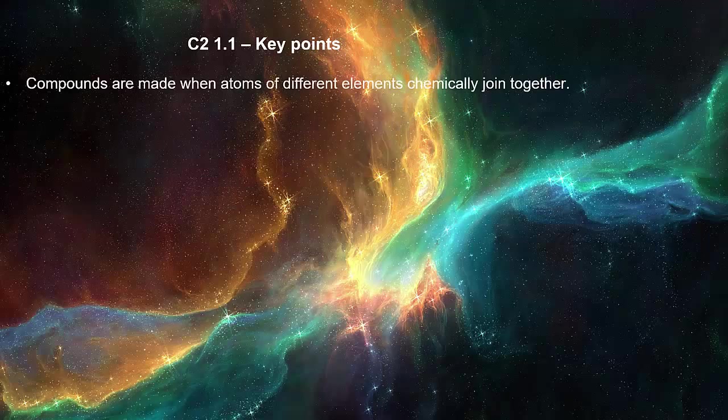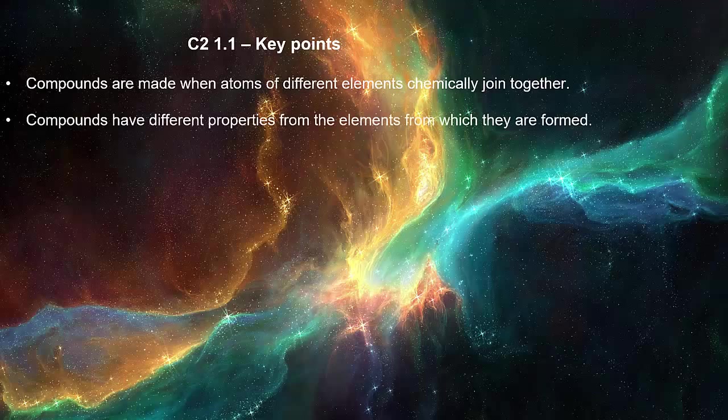Compounds are made when atoms of different elements are chemically joined together. Compounds have different properties from the elements from which they are formed.